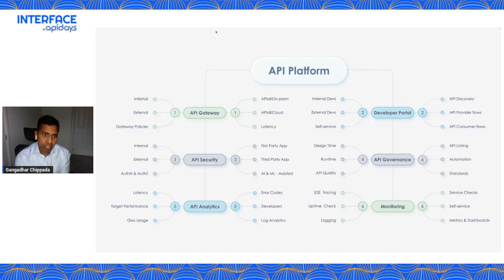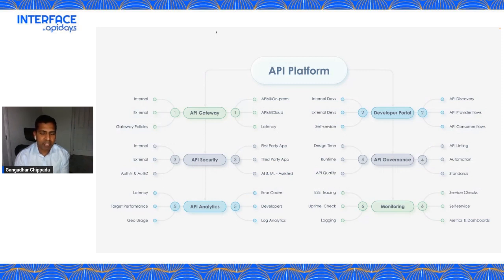From an API gateway perspective, there are a number of design choices that need to be made. Let's talk about internal APIs and external APIs. APIs that need to be accessed outside your organization are called external APIs, and those restricted within the organization are internal APIs. When choosing an API gateway, you need to think through whether your APIs are internal, external, or whether you need to invoke an API outside your organization where you're the API client.